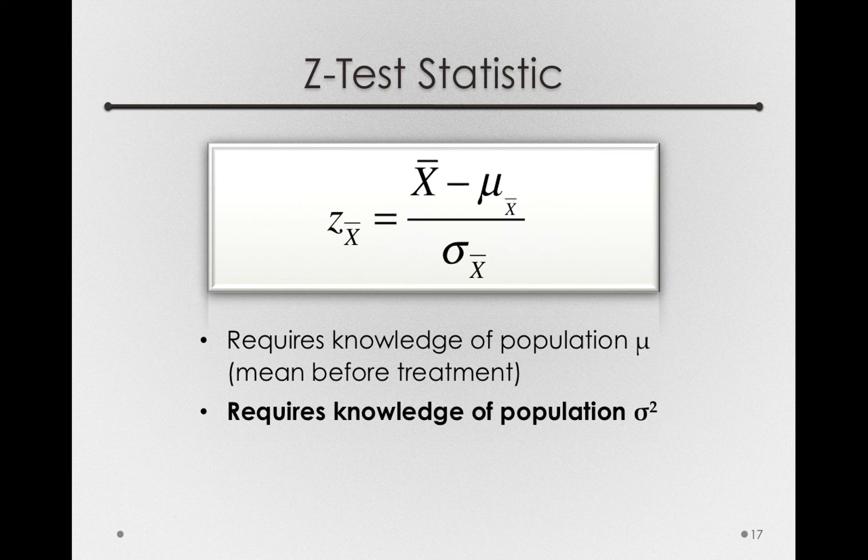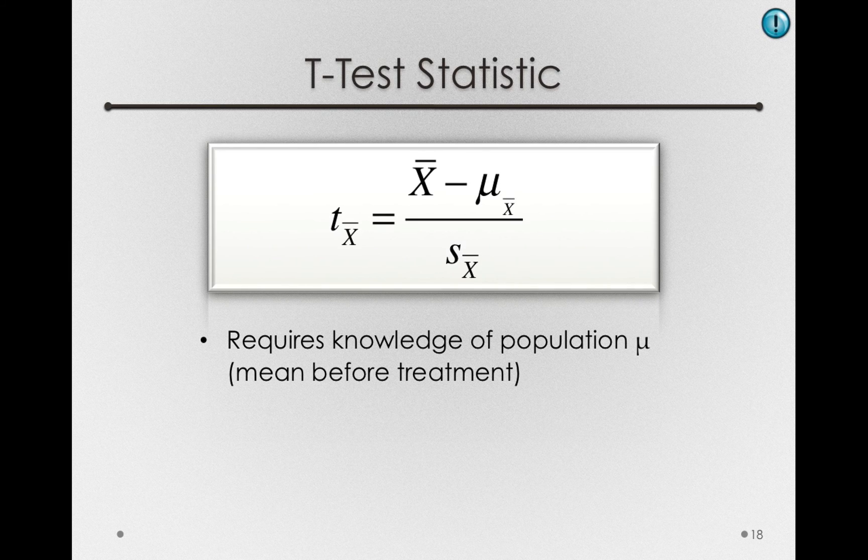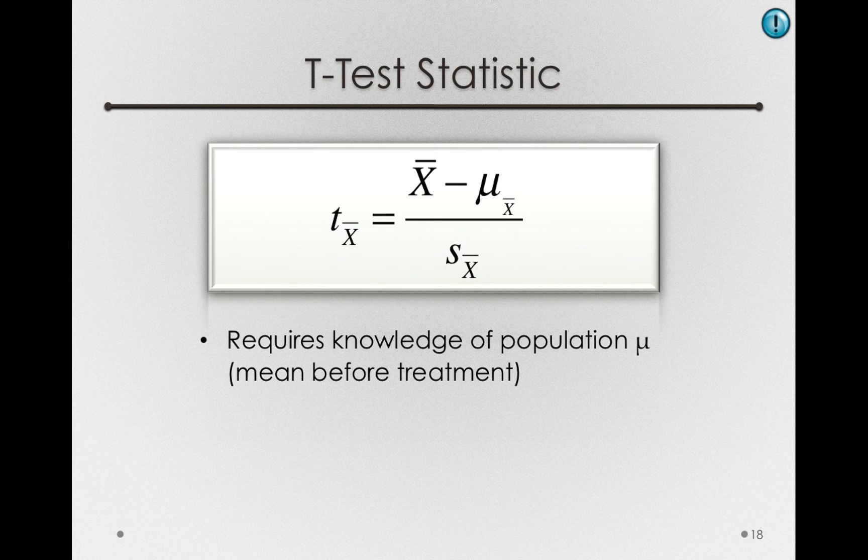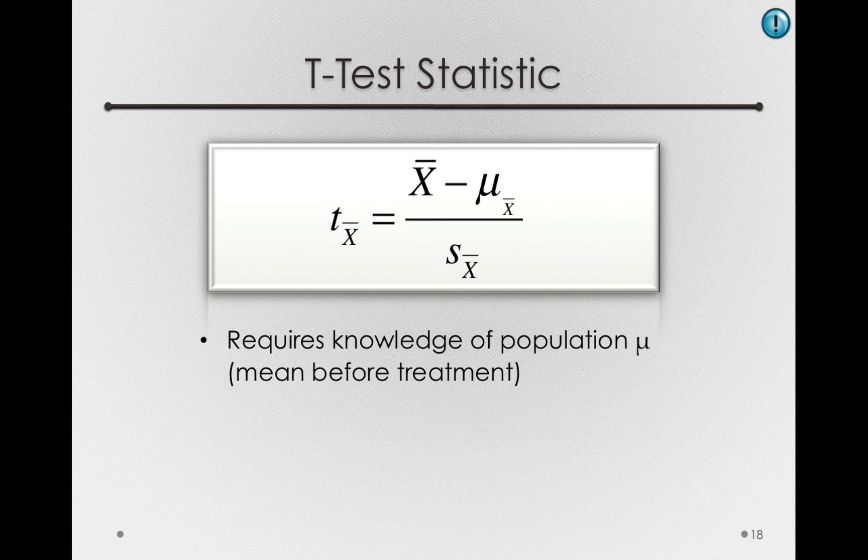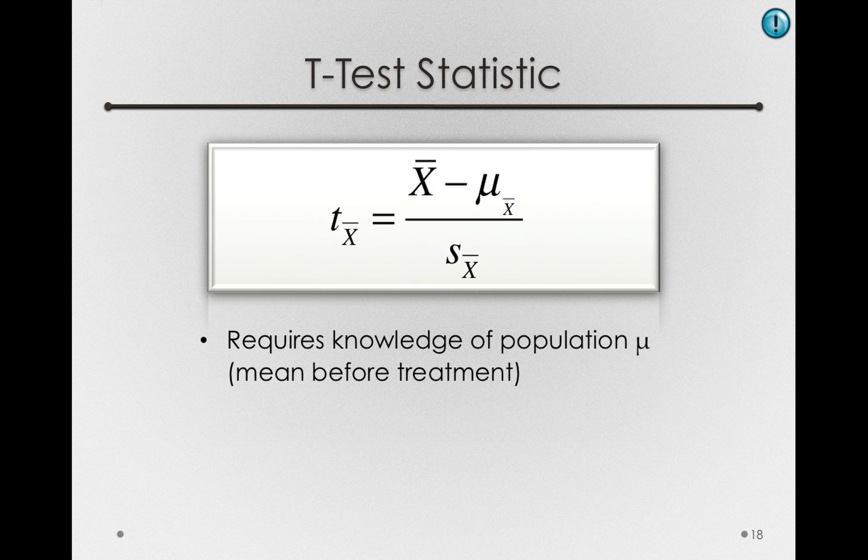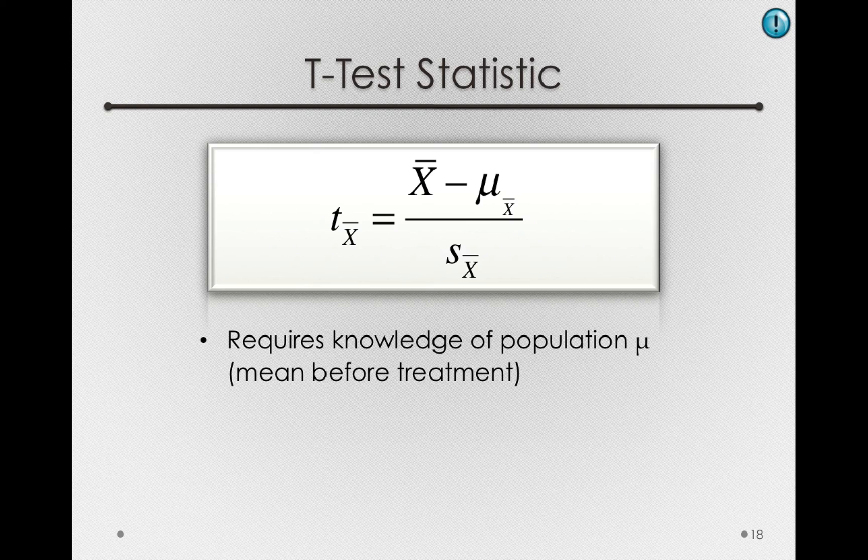But everything else looks the same, you'll notice. Our t sub x bar, that is the value of t for our particular sample mean, is simply our sample mean minus the population mean we expect, if the null hypothesis is true, divided by the estimated standard error.